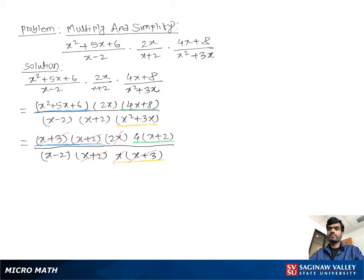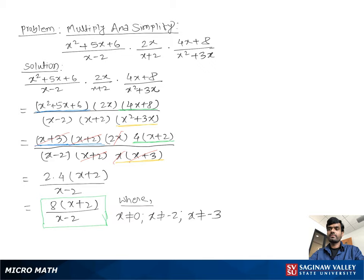Now (x + 3) cancels out, (x + 2) cancels out, and x cancels out. So we have left: 2 times 4 times (x + 2) over (x - 2). Since 2 times 4 is 8, we can write 8(x + 2) / (x - 2). This is our answer.